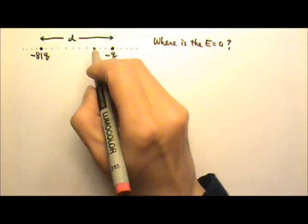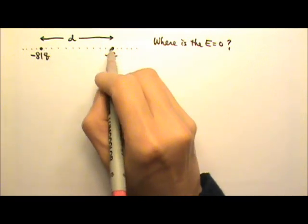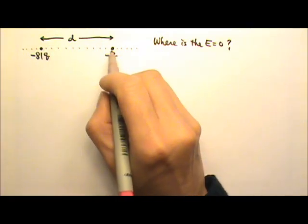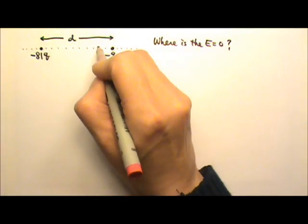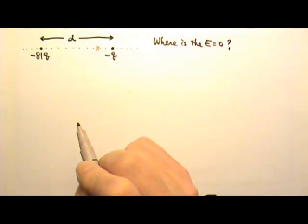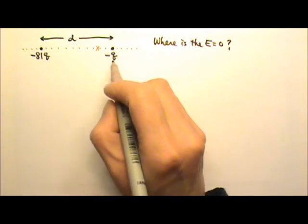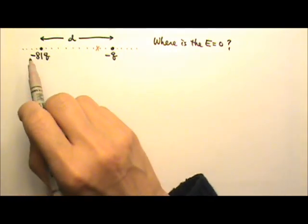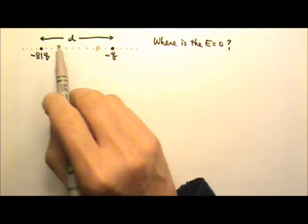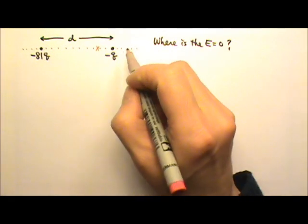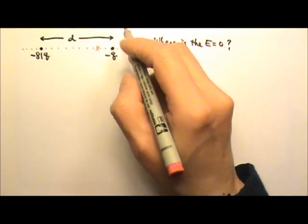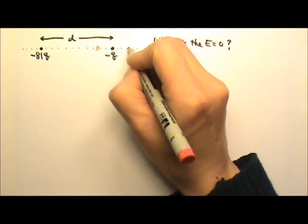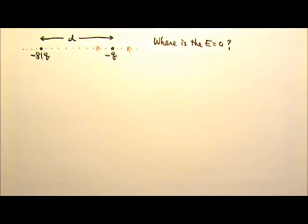That means if the location is in between the two charges, it must be closer to the weaker charge over here. Or if it's outside, it must be on the right side, so it can be closer to the weaker charge.